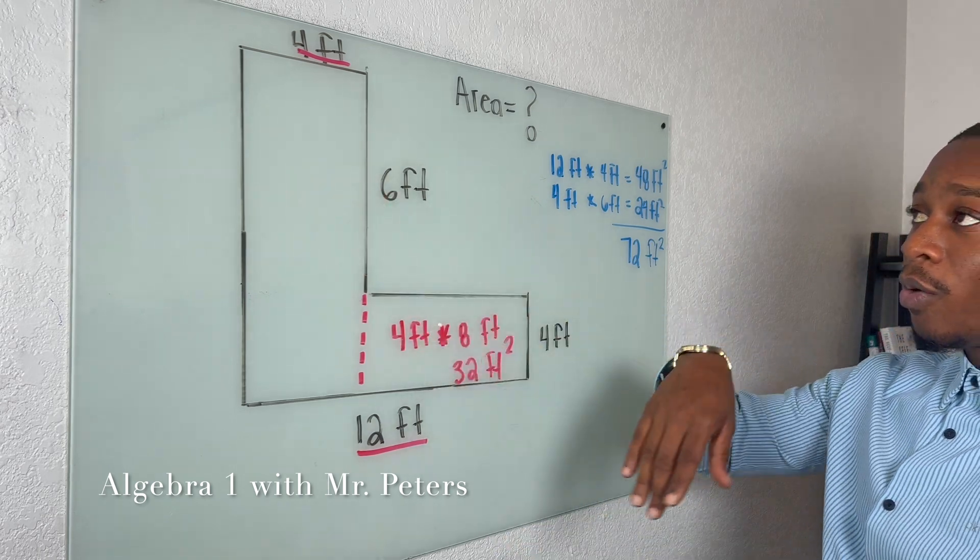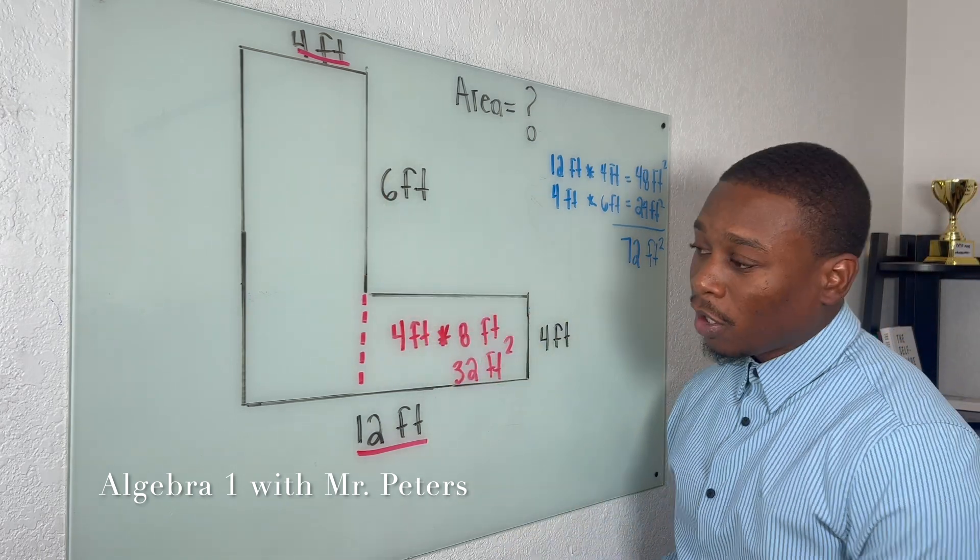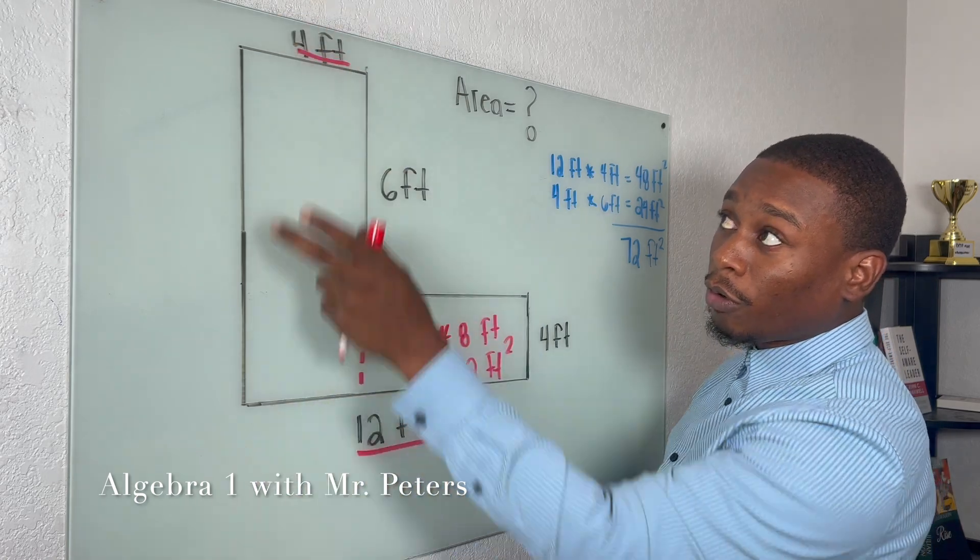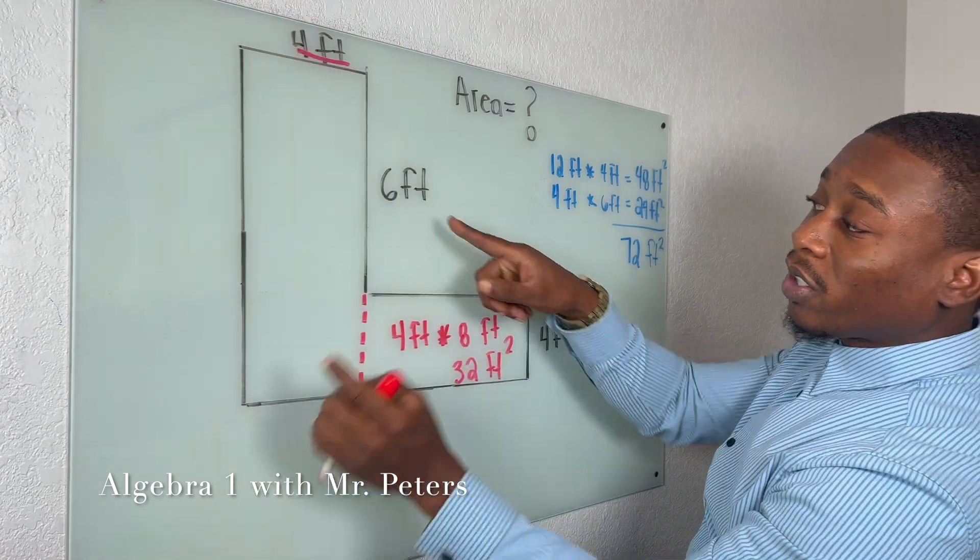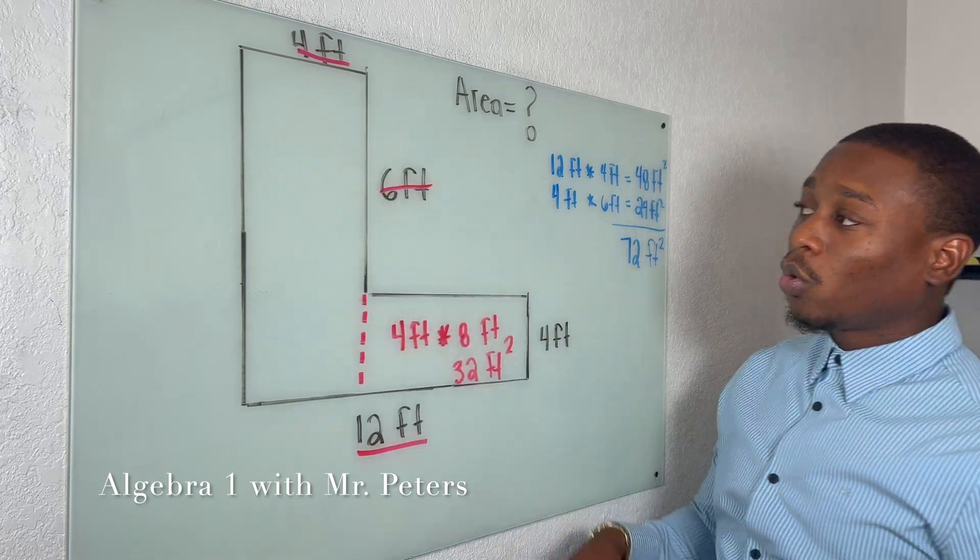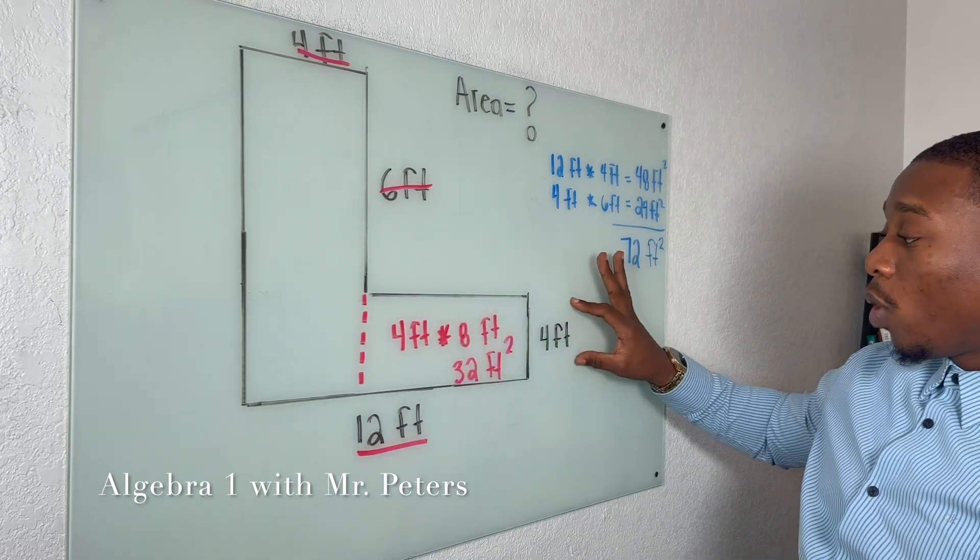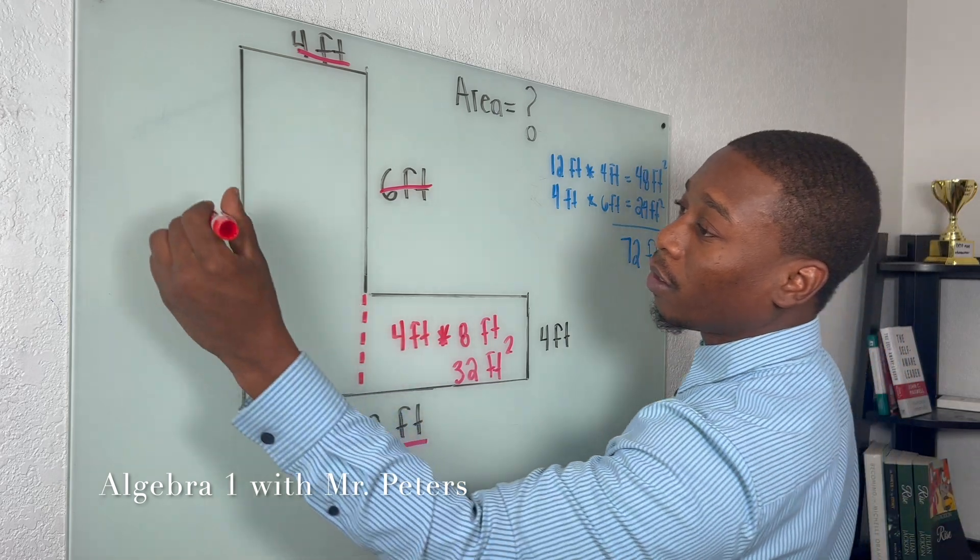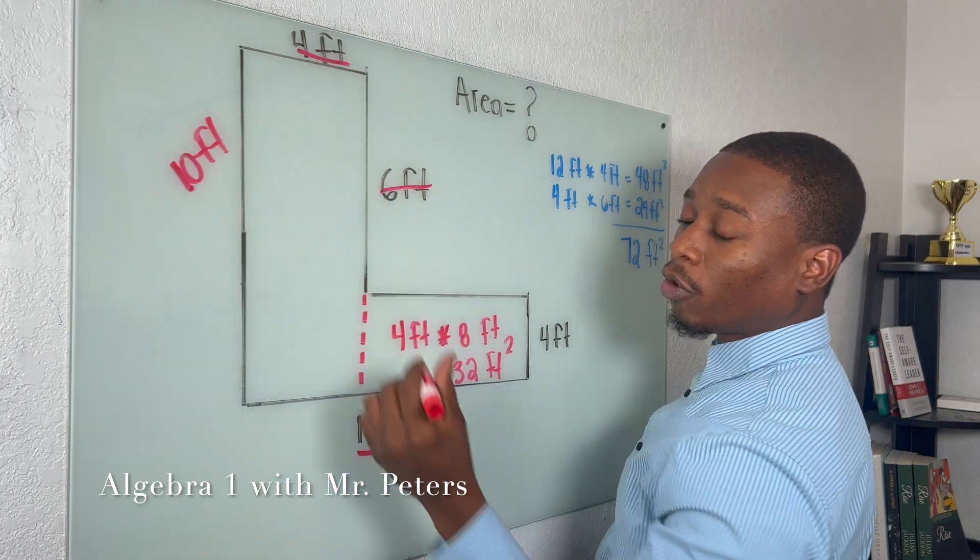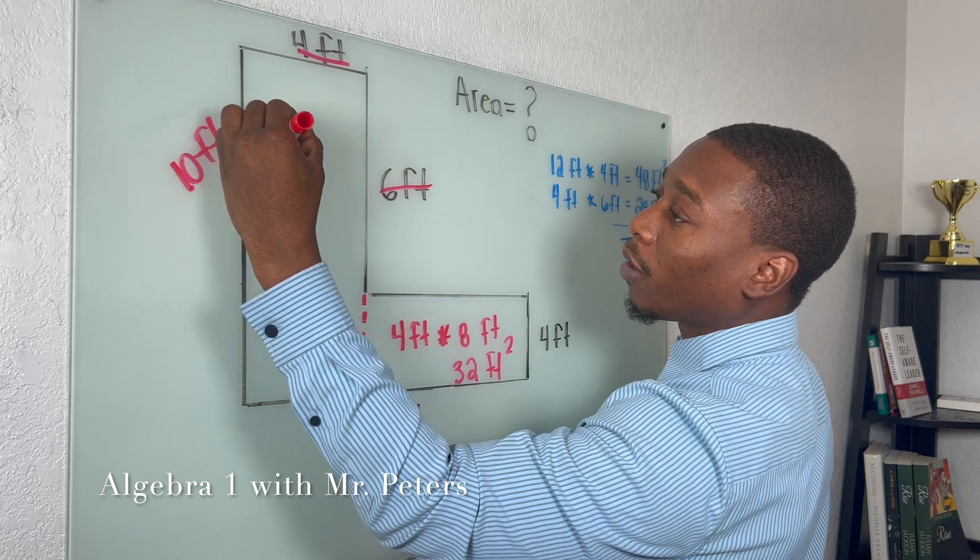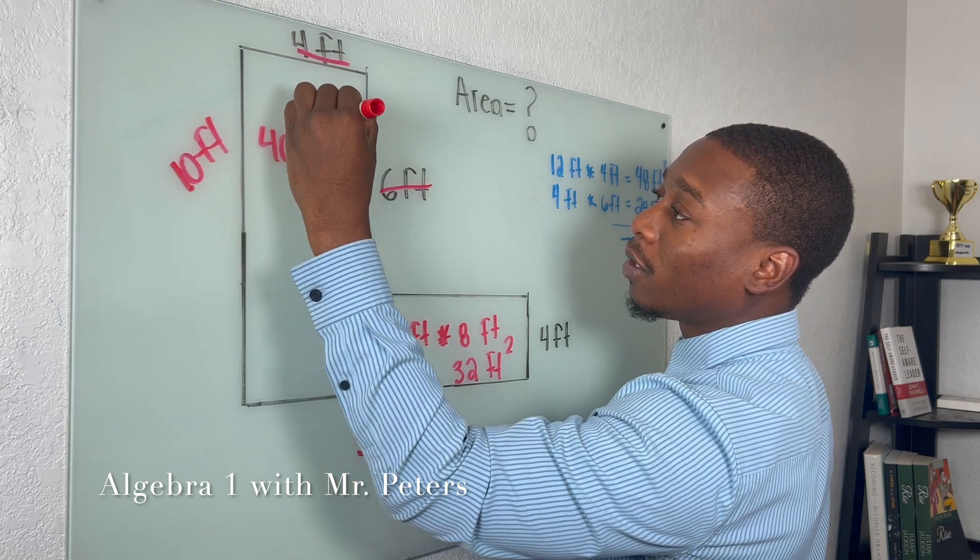When we go over to here now, the dimensions change. So the width is still four. But when we look at the length, it's no longer six. What we need to do is add six with four to get 10. So now once we look at this shape here, we're going to multiply four by 10 and we're going to get 40 feet squared.